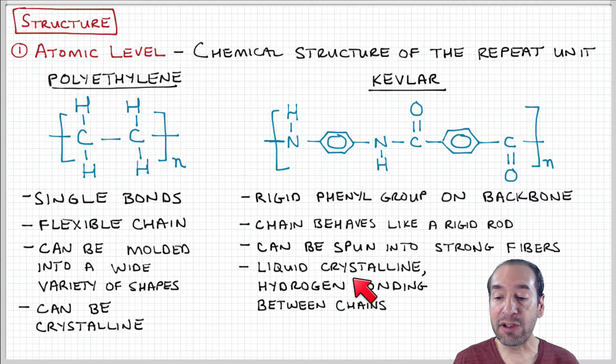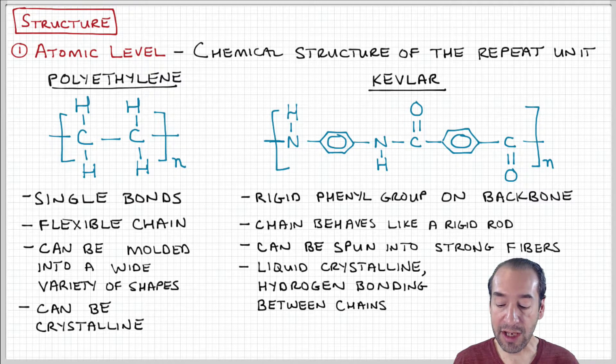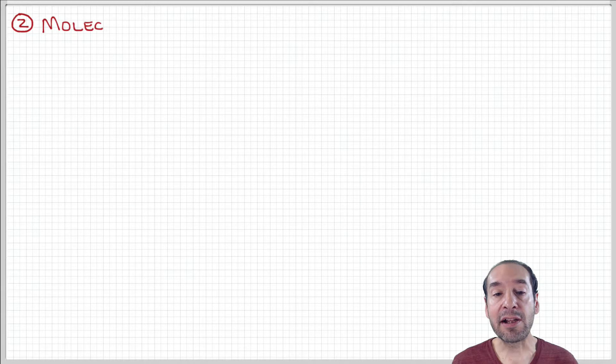They can also experience secondary interactions like hydrogen bonding between chains. These are examples of atomic level structure that we can use to compare different kinds of polymers.